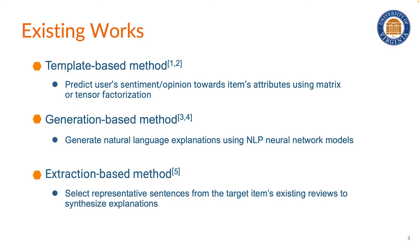Generation-based methods leverage NLP models such as RNN or BERT and train on large-scale review datasets to predict what is the possible review that a user would give to an item. Extraction-based method select representative sentences from the target item's existing review and combine them together to become an explanation.